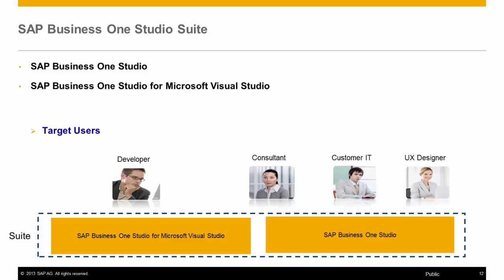SAP Business One Studio Suite is a state-of-the-art development platform for SAP Business One extensions that dramatically improves development efficiency. It provides an effective, integrated development environment to develop extensions on top of SAP Business One. SAP Business One Studio consists of two editions: SAP Business One Studio, geared towards technical IT, UI designers, and consultants for easy creation or modification of existing forms; and SAP Business One Studio from Microsoft Visual Studio, geared towards developers as it is tightly integrated with Visual Studio and .NET and allows for code generation.